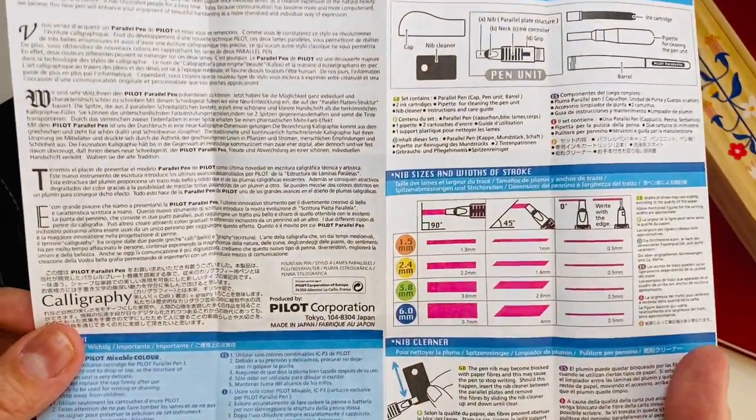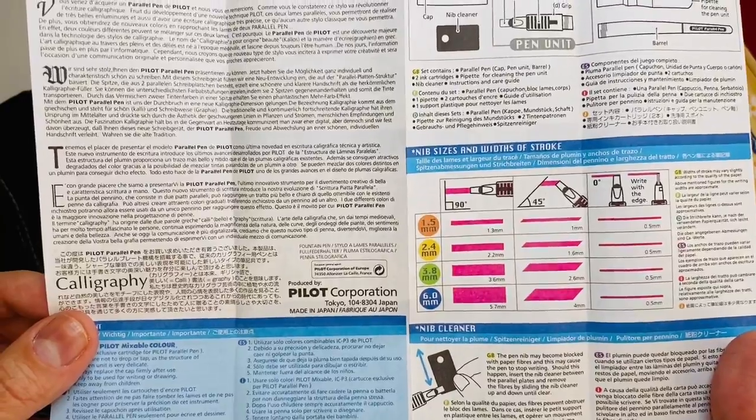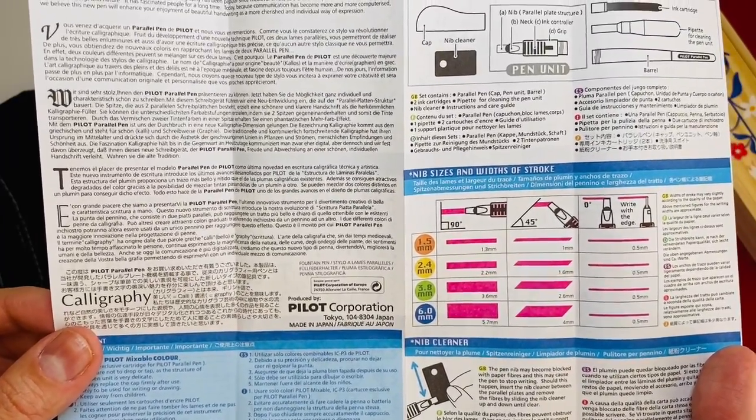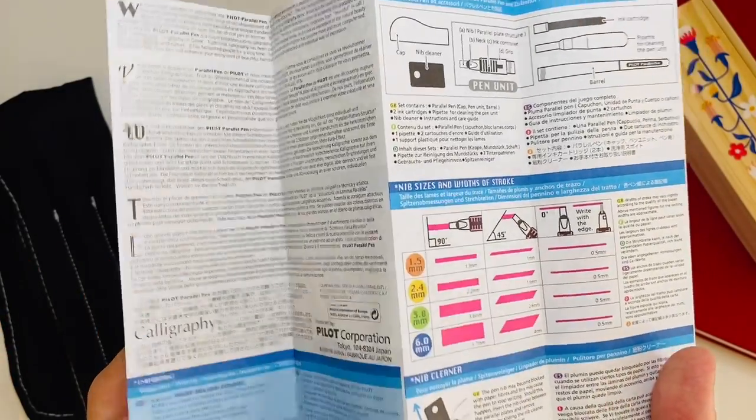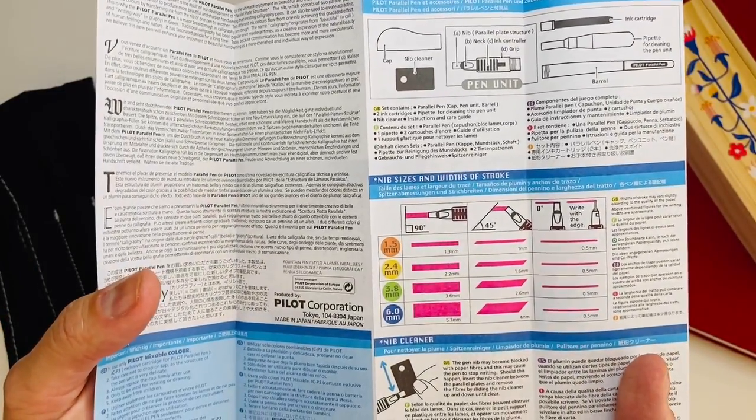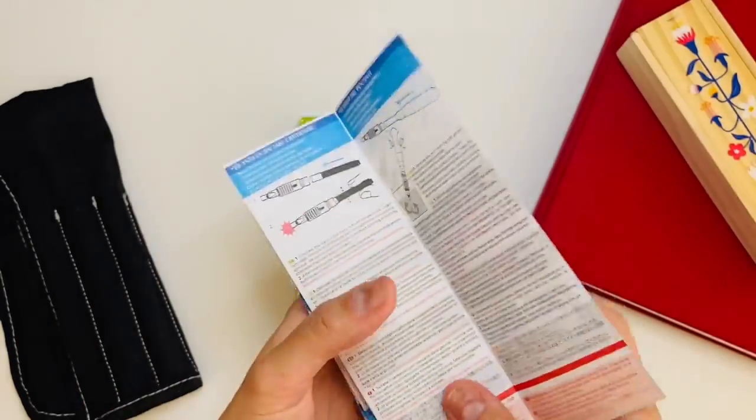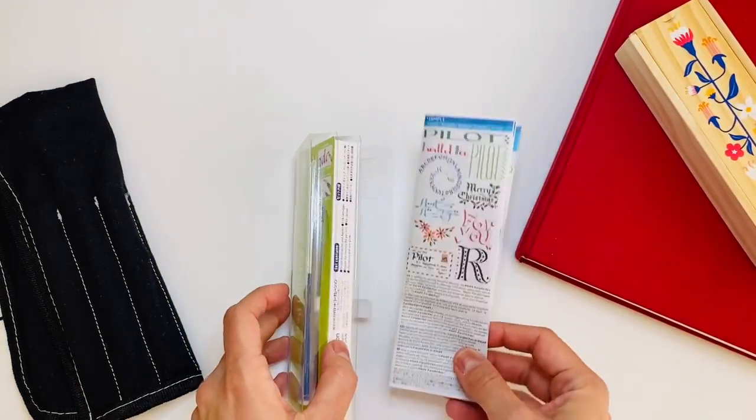Here it shows the different types of nib sizes, so 1.5 millimeter up to 6 millimeter. And if you use the nib at different angles, you can get different types of lines, which I think is what really attracted me to this. So I'll show you in a bit how that performs on paper.